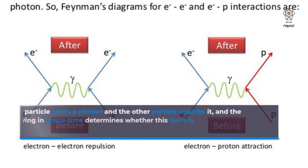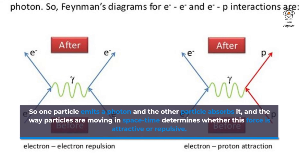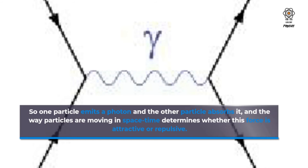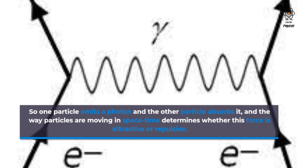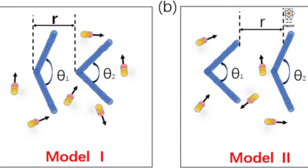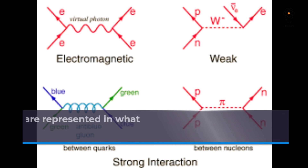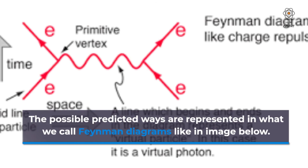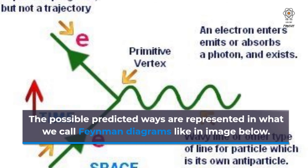So one particle emits a photon and the other particle absorbs it, and the way particles are moving in spacetime determines whether this force is attractive or repulsive. The possible predicted ways are represented in what we call Feynman diagrams, like in the image below.